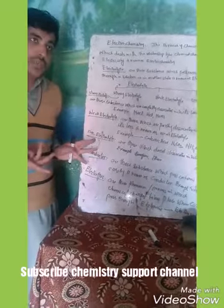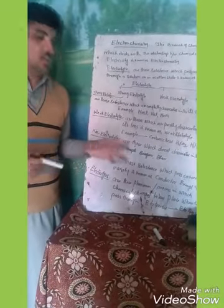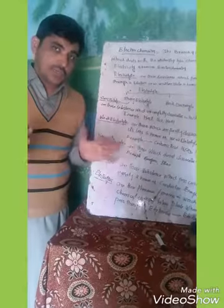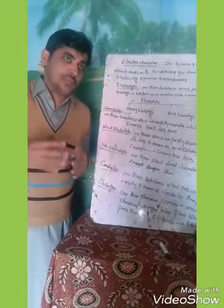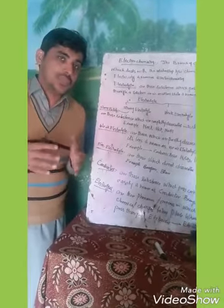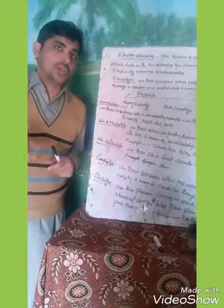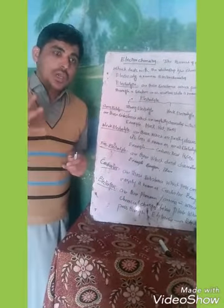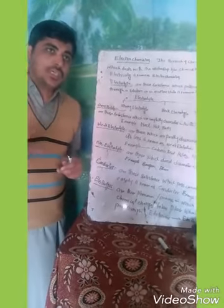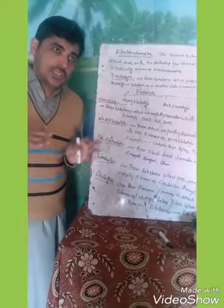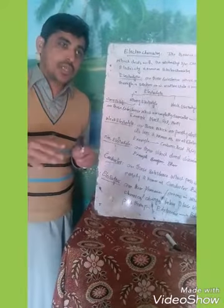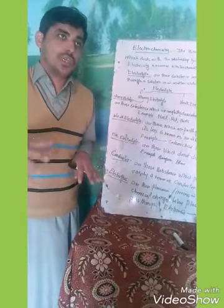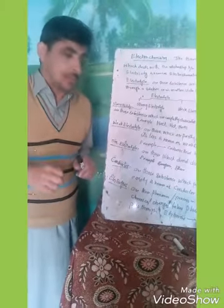Non-electrolytes are those substances which do not dissociate into positive and negative ions, meaning they cannot dissolve in water. For example, benzene and ether in water — they cannot dissolve; they float on the surface of water. Therefore, they are known as non-electrolytes.